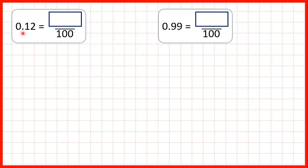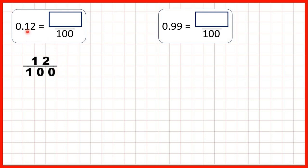Now we have 0.12. The first digit after the decimal point tells us how many tenths we have, and the second digit tells us how many hundredths we have. But our answer isn't just 2 hundredths because we can change the 1 tenth into hundredths as well. 0.12 is actually 12 hundredths. If we see a number with two decimal places, we can draw a line across from the decimal point and write a denominator of 100.